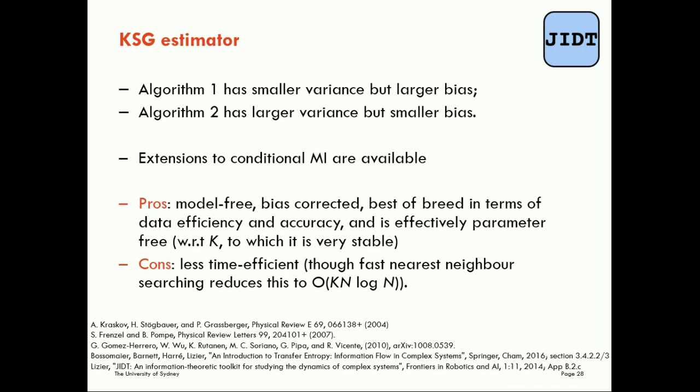In terms of the pros and cons of the KSG estimator: there are a lot of pros. It's model free, it's bias corrected, it's best of breed in terms of data efficiency and accuracy — much more efficient and accurate than a kernel estimate. And it's effectively parameter free. K is still a parameter, but estimates are relatively stable to it. As long as you use K equals four or above, it's very stable to that parameter setting. Going below K equals four will generally lead to under-sampling.